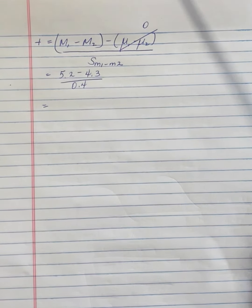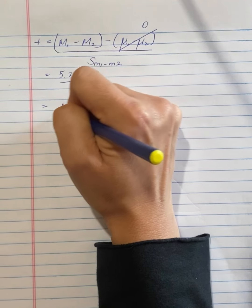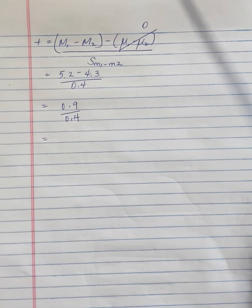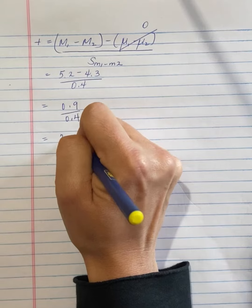So what that gives us is 5.2 subtract 4.3, which is 0.9, divided by 0.4, which is 2.25.